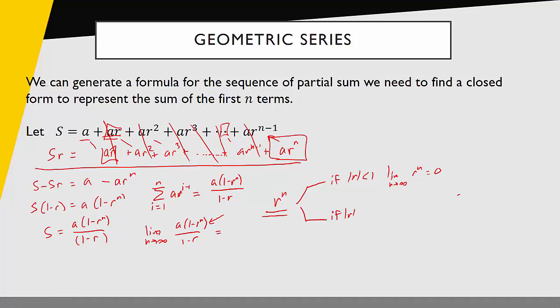But what if the magnitude of r is bigger than 1? Then we'd be looking at something like 2 raised to the n power — 2 squared, 2 cubed, 2 to the 4th — values getting bigger and bigger. So in that case, this does not converge. Using this information, we can see that the limit as n goes to infinity of the sequence of partial sums converges only if the absolute value of r is less than 1.